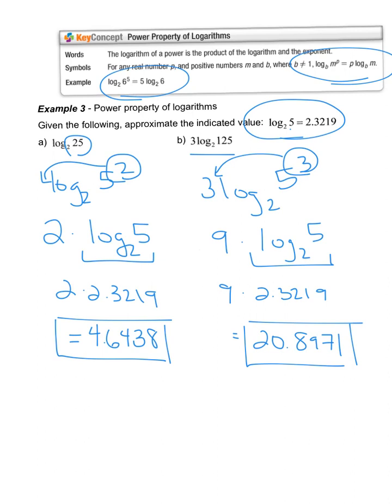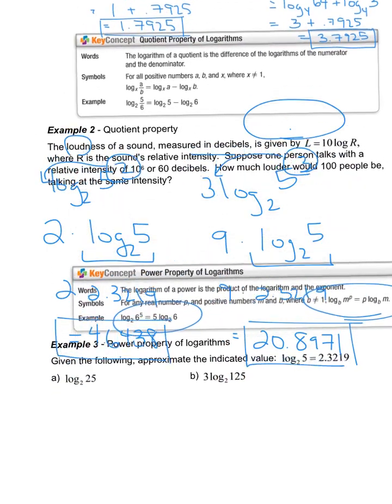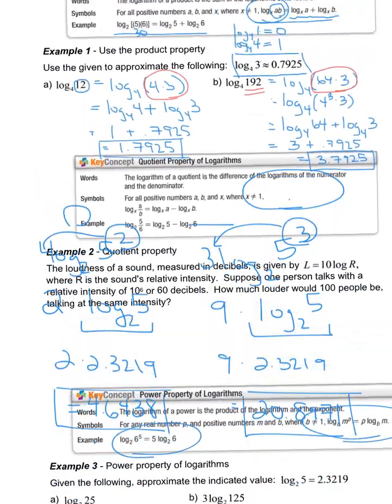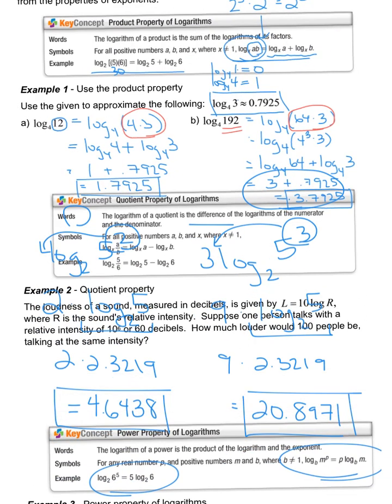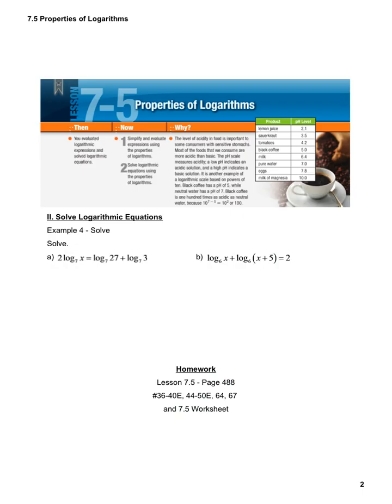So again, these three problems are going to be the toughest of the day. Just remember, when we have a power, it drops to the front. When we have a quotient, we subtract. And when we have a product, we add the two together. If we continue on to these last examples, just looking at solving using properties.